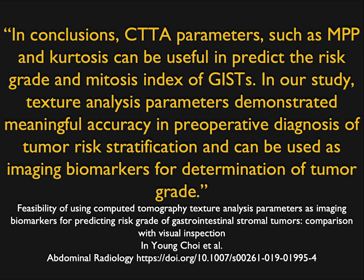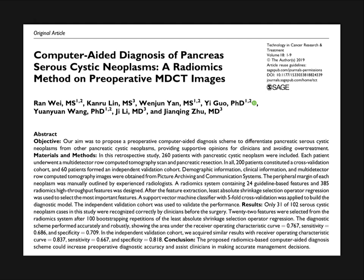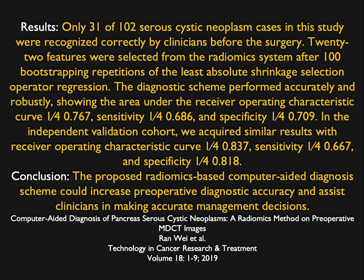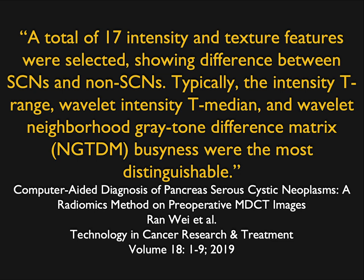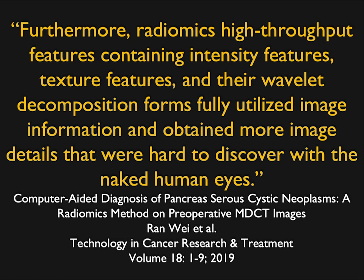Sticking with the pancreas and cystic lesions: one article shows you can distinguish serous cystadenomas from other cystic lesions, and the technique could increase preoperative diagnostic accuracy and assist clinicians in deciding who to operate on. They looked at 17 different features between serous cystadenomas and non-serous cystadenomas. The radiomics high-throughput features contained intensity, texture, wavelength, and decomposition, and obtained more image details than were hard to discover with the naked human eye. The point is we're changing how we think about things.